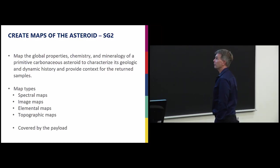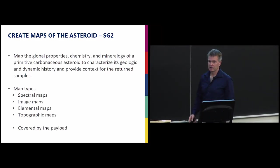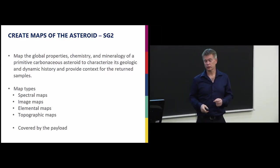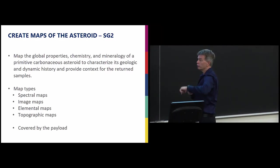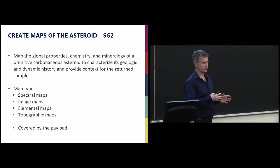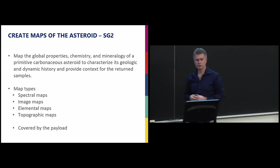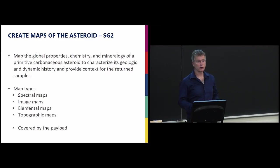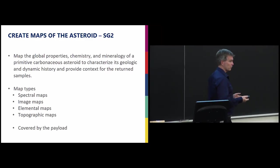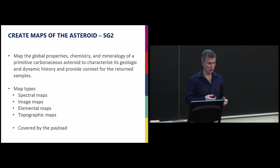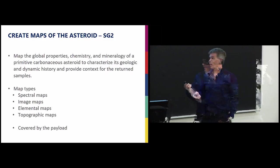Here's some of the goals that are leading up to it. We want to create maps of the asteroid. This is to understand the context of the sample and to understand about the asteroid itself. So we have numerous map types. We have spectral maps. So how does the material change the reflectance of light as a function of the color of light or the wavelength of light? We have camera systems, so we're going to do image maps. We have some ability with the different types of spectrometers to do elemental maps. And topographic maps.